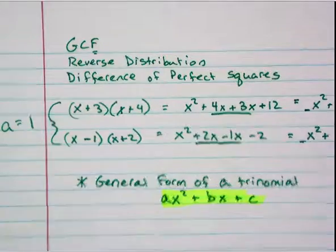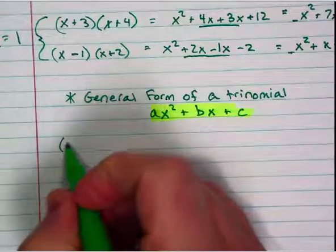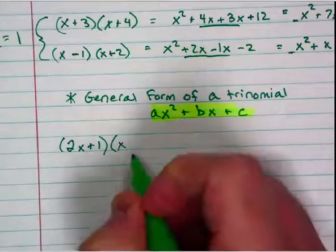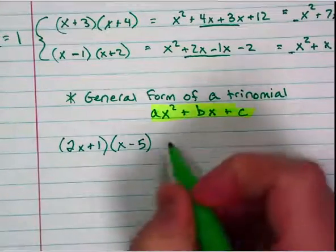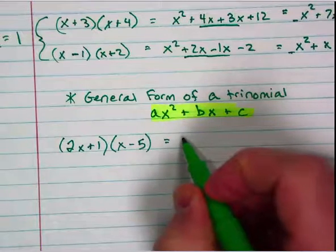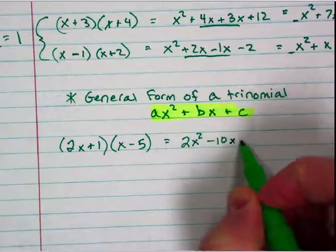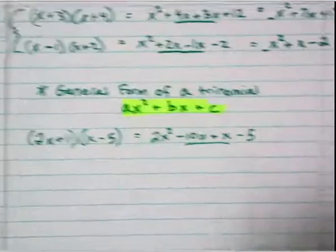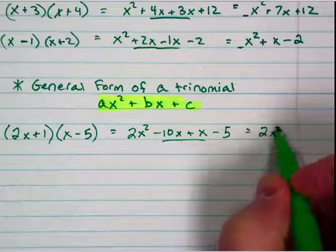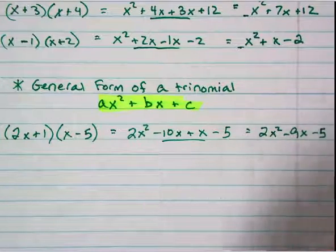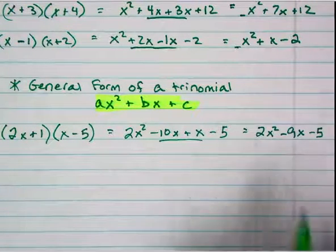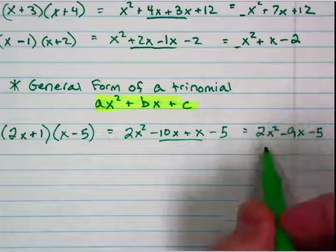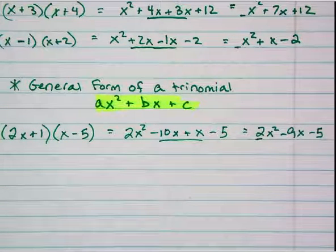What would happen if I gave you something like 2x plus 1 times x minus 5? If we do our double distribution, we get 2x squared minus 10x plus x minus 5. These go together and give you 2x squared minus 9x minus 5. But what's different from the ones on top is that the leading coefficient is not a 1, and that changes the way we factor.